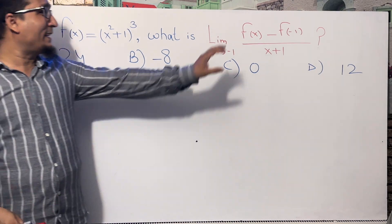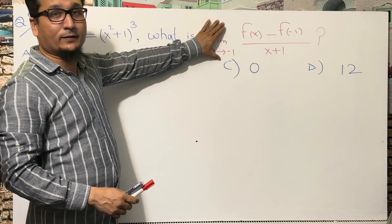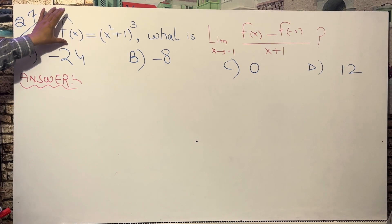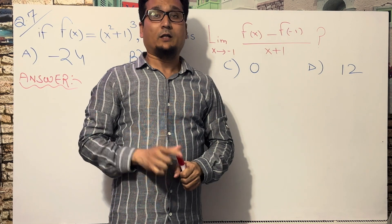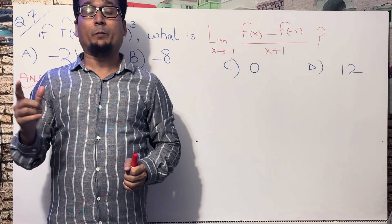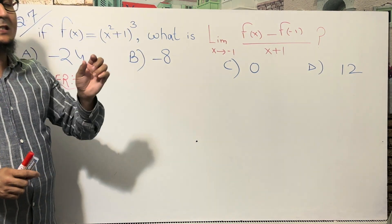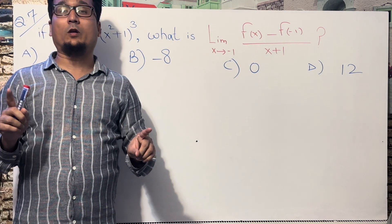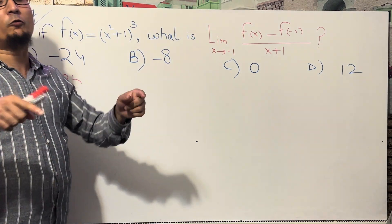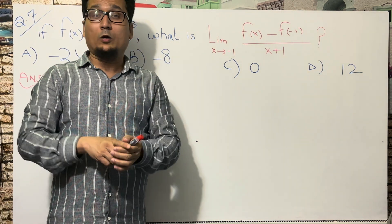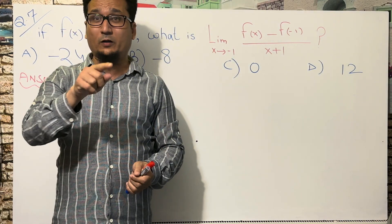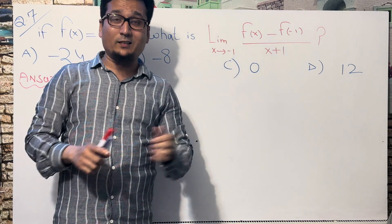First, I want to explain what this means. When you have a function and need to find the slope — from grade six to grade eleven everyone knows how to find the slope of a line, but nobody knows how to find the slope of a curve, because there is no direct formula for it. If you have a curve, you have to find the derivative. Once you have the derivative, you can find the slope at any point, since the slope changes at different points on a curve, whereas on a line it is always constant.